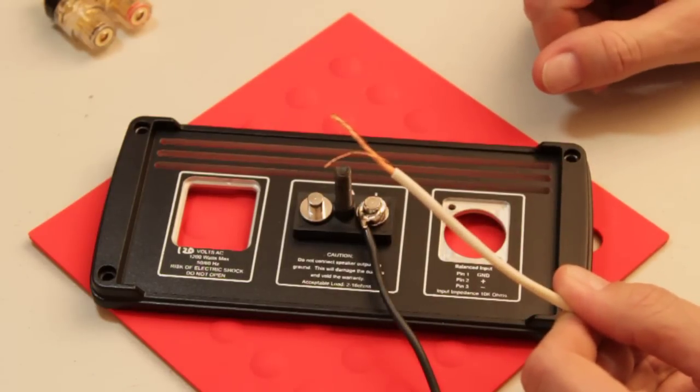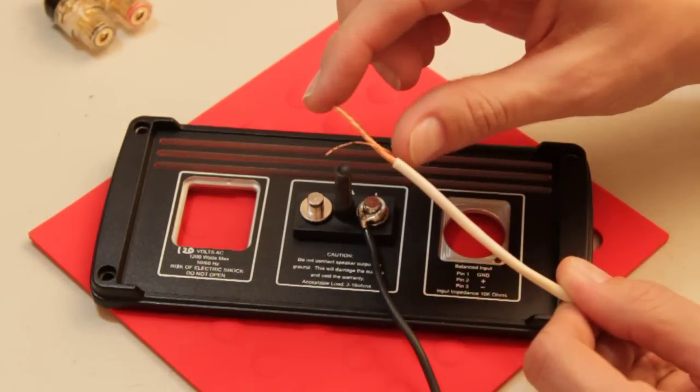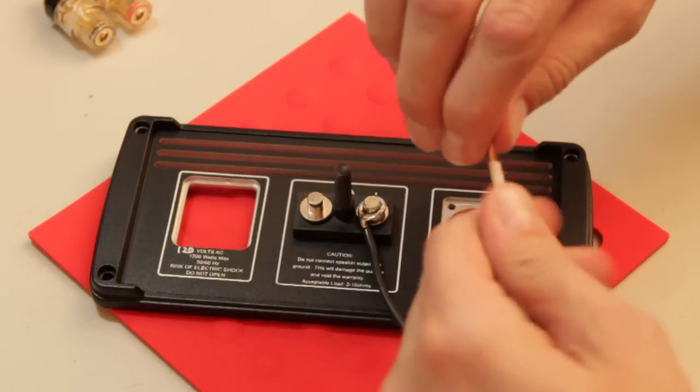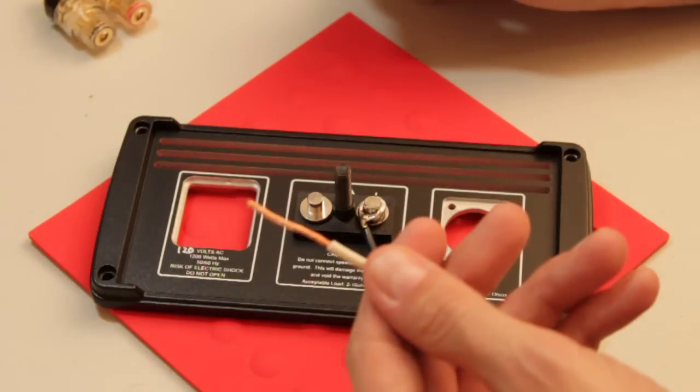Here we've got 14 gauge stranded bare copper wire. I've stripped off one and a quarter inch from the end. When you've done that, twist it tightly, making sure you don't have any stray pieces coming off.